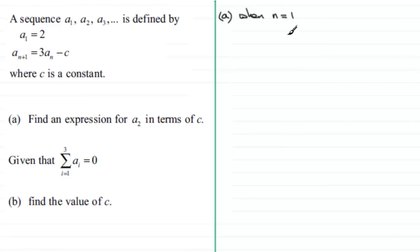we get a₂ equals 3aₙ, but n is 1, so it's 3 times a₁ minus c. We know a₁ is 2, so we have 3 times 2 minus c, which equals 6 minus c.